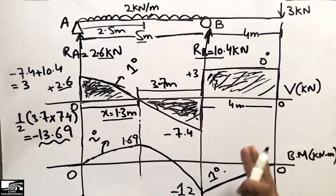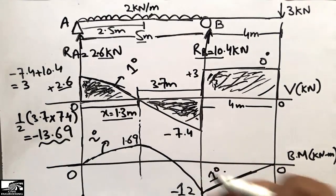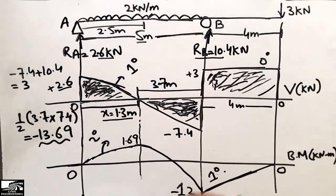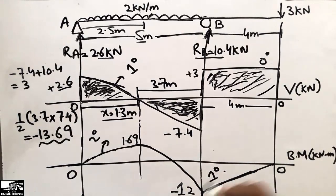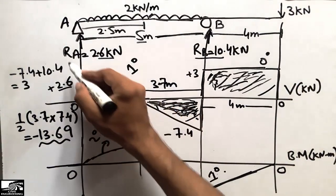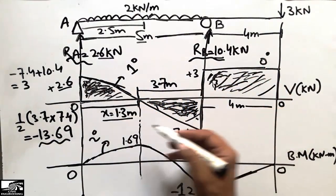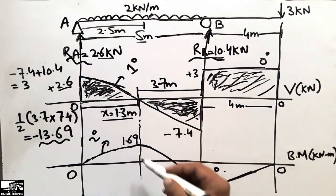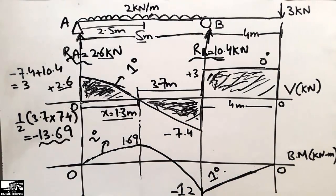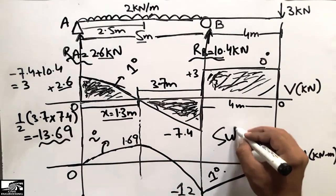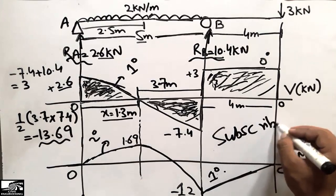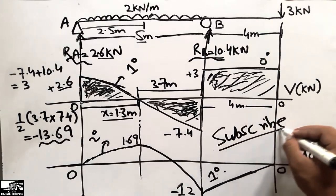This was the method for finding the shear force and bending moment diagram. You can apply this to any type of problem: first find the support reactions, then find the shear force, then find the area of each shape to get the bending moment diagram. Don't forget to subscribe to our channel for daily engineering videos. Thank you for watching.